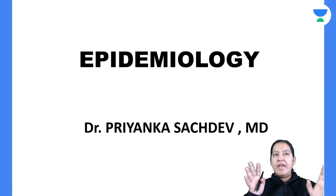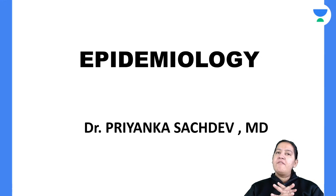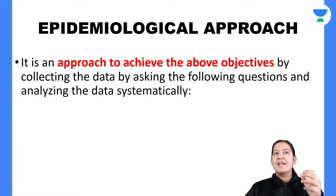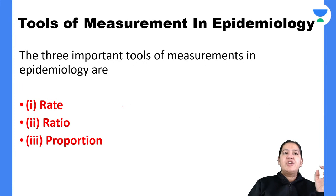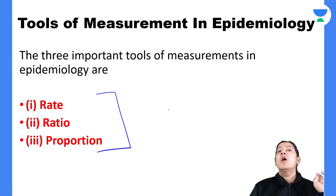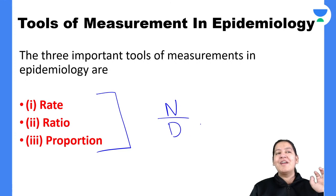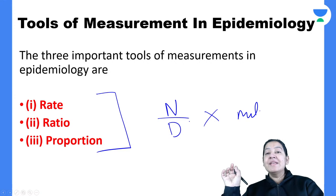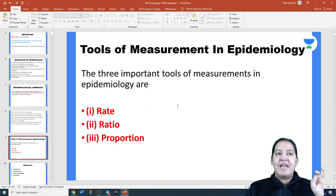Today is the first day of the series. In the first lecture, we studied the difference between rate, ratio, and proportion — all of them have a numerator, a denominator, and a multiplier, but we understood the differences. After that, we moved to the measures of mortality.